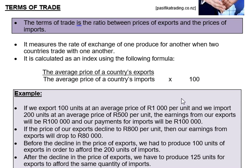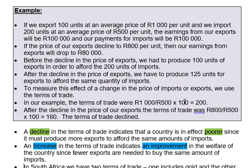Looking at the example: if we export 100 gadgets at an average price of 1000 rand per unit, our export earnings are 100 units × 1000 rand = 100,000 rand. At the same time, if we import 200 units at an average price of 500 rand per unit, 200 × 500 also equals 100,000 rand. So we have to export 100,000 rand worth of goods in order to earn enough to afford to import 200 units.